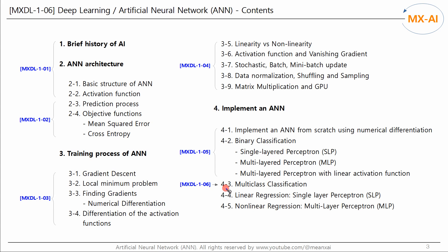So far, we have looked at the cross-entropy loss function and the softmax function for multi-class classification, and created a two-layer neural network with code to perform multi-class classification. In the next video, we will look at the regression problem.